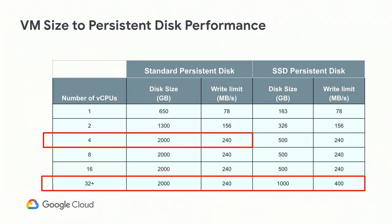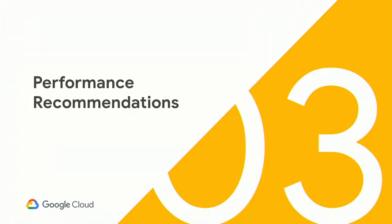Another key criteria for peak performance is the VM size required. For PD standard, you only need four vCPUs to achieve maximum performance. For PD SSD, you can get to peak with 32 vCPUs — fairly aggressive in terms of CPU cycles needed to reach those levels. I'll now transfer control to Stanley for more details around performance.